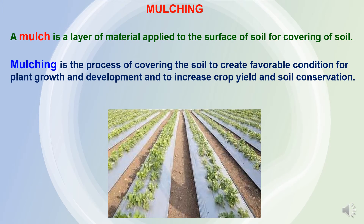What is mulching? Mulching is related to mulch, where mulch is a layer of material applied to the surface of soil for covering of soil. Mulching is the process of covering the soil to create favorable conditions for plant growth and development, and to increase crop yield and soil conservation practices.